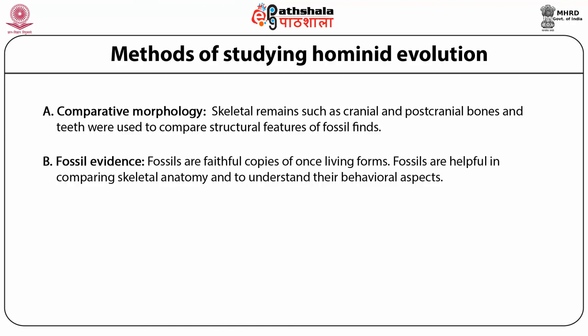The next method is fossil evidence. In this, the process of fossilization involves hard animal parts such as bones and teeth being replaced by minerals. These fossils are faithful copies of once-living forms. Generally, cranial bone and teeth are recovered as hominid fossil finds. Post-cranial bones, which are prone to rapid disintegration, are scarcely found. Fossil finds are not only helpful in comparing skeletal anatomy but also help to understand behavioral aspects such as dietary practices.